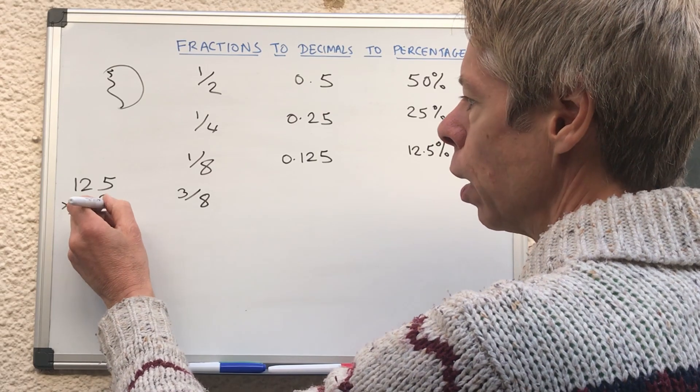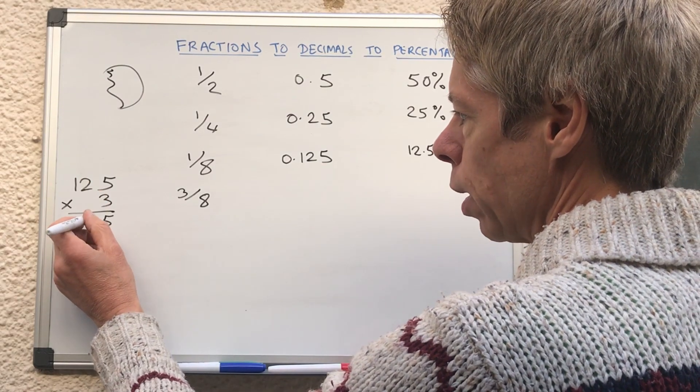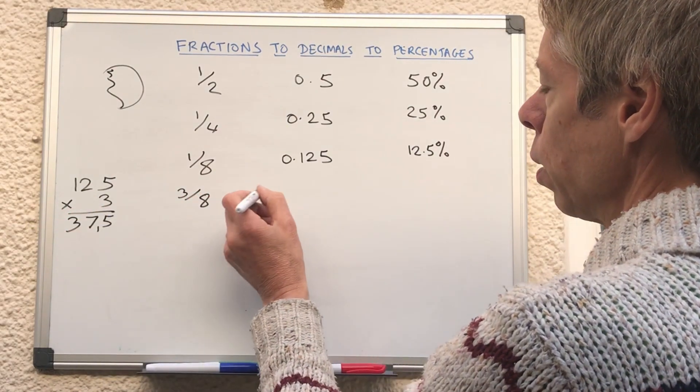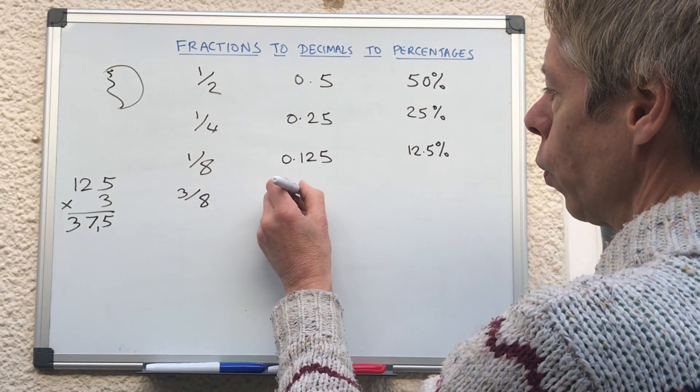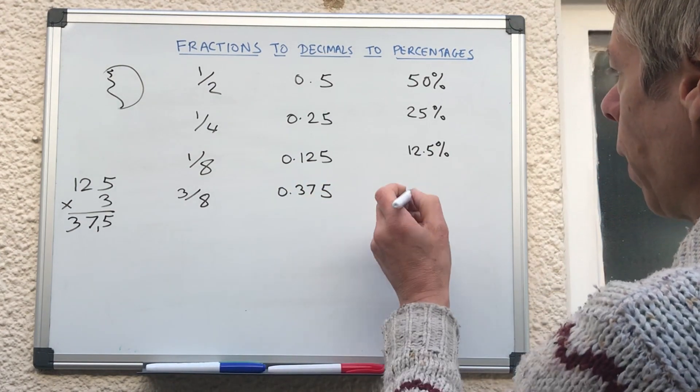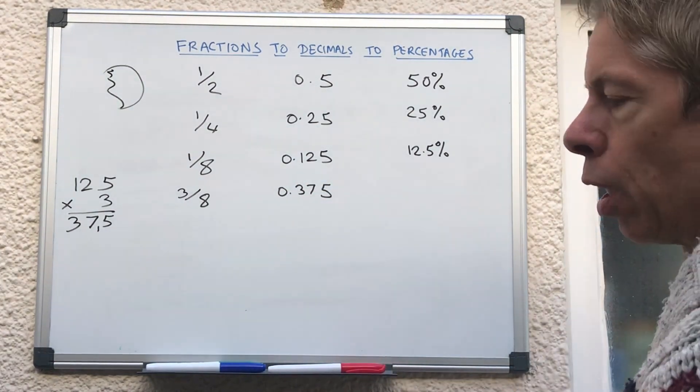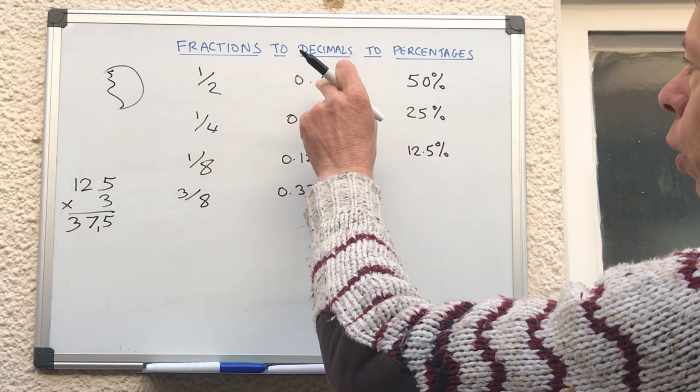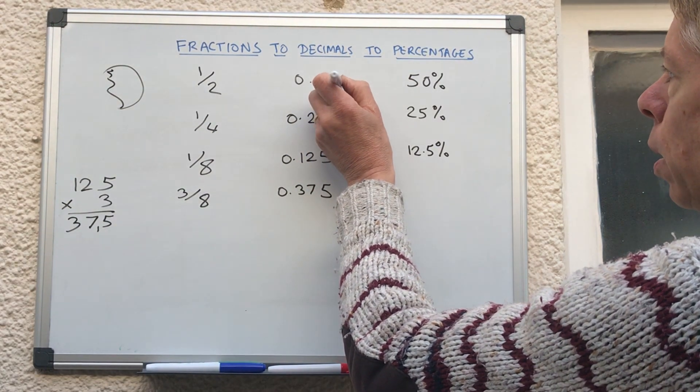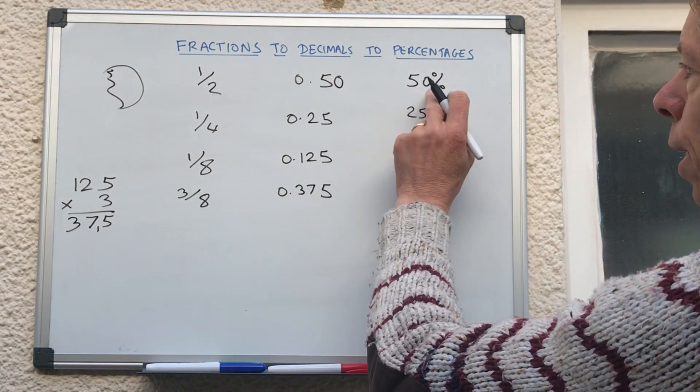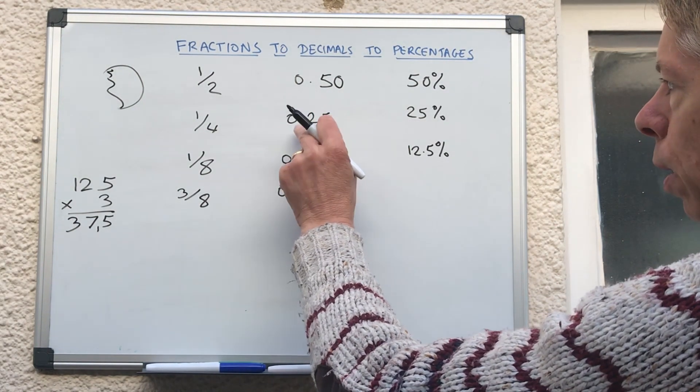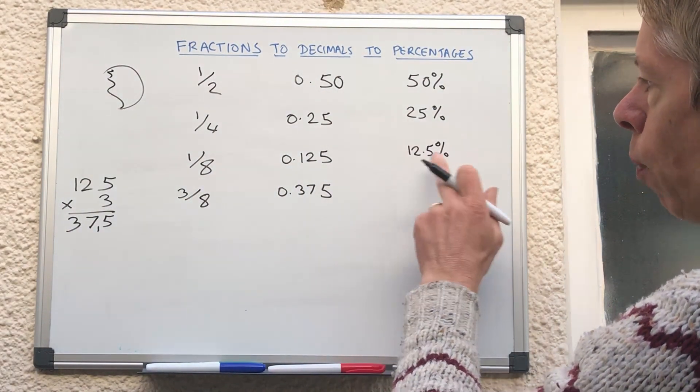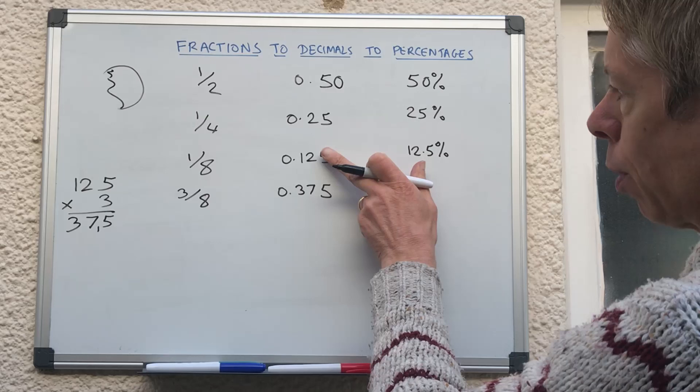So three times five is 15. Three times two is six plus one is seven. Three times one is three, 375. So three eighths is going to be 0.375 and then that is going to be, if you want to convert decimals into percentages, you need to have two decimal places. So we put a zero on there, that makes that 50. We already had a five there, so that's 25%.